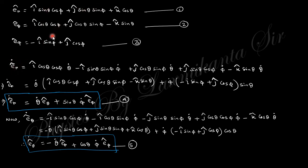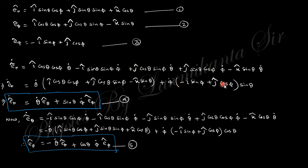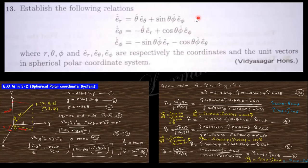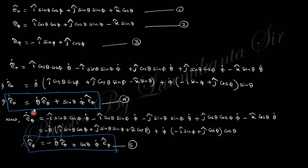Taking the derivative with respect to time of r_cap: since i_cap is constant its derivative is zero. For the sinθ·cosφ term, the derivative gives cosθ·θ̇·cosφ − sinθ·sinφ·φ̇. Taking θ̇ as common from one group gives the e_θ_cap component, and taking φ̇ as common from the other gives the e_φ_cap component, confirming the relation.